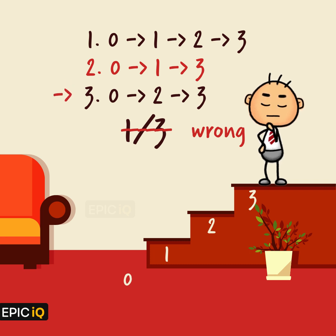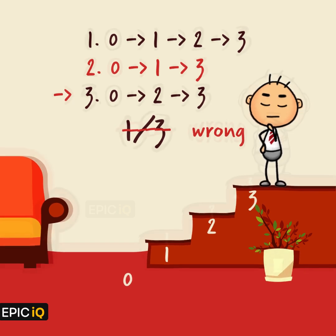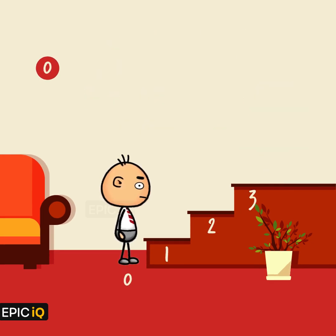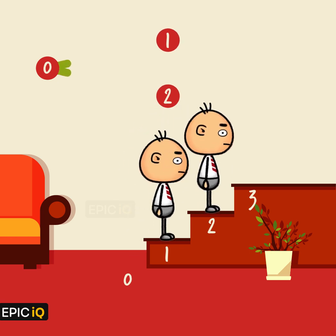Look at the third case: floor to second step to the third. The probability of this scenario is not one by three, but one by two. Let us jump the stairs again. Little Ted is at the floor. Here he has two choices: either to go to the first step or to the second step. The probability of visiting each of these steps is half. So P(0 to 1) is half, and P(0 to 2) is half.